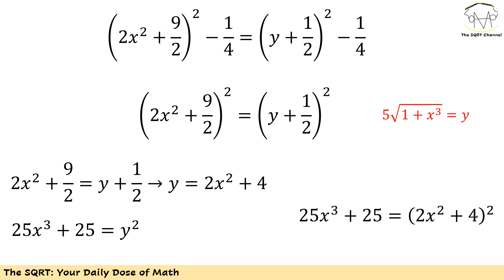That's the first equation. The second equation comes from the definition of y: we defined y as 5·radical(1 + x³), so squaring gives y² equals 25x³ + 25. Now I substitute y = 2x² + 4 into this second equation, giving: 25x³ + 25 equals (2x² + 4)². Now I have one equation in x only, which I need to solve.